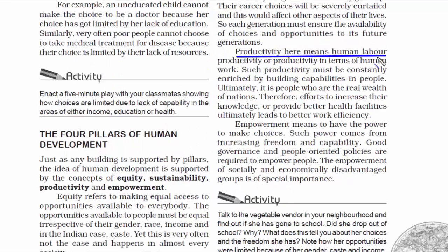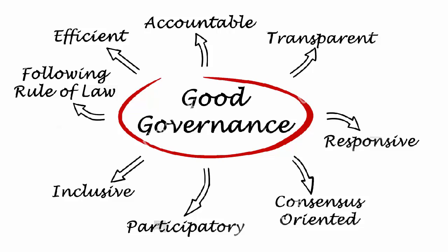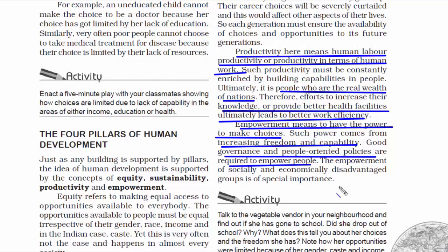The third pillar is productivity, meaning the amount of work put in by a labor or a human. People are the real wealth of nations, so improving their lives, their health, and increasing their knowledge will lead to better work efficiency. More and better work will increase a nation's economy. The fourth and last pillar is empowerment — the power to make choices. Power comes from increasing freedom and capability. In a society, the only way to empower people is by good governance, meaning the government working for and with the people by making public policies that ease the life of the people.